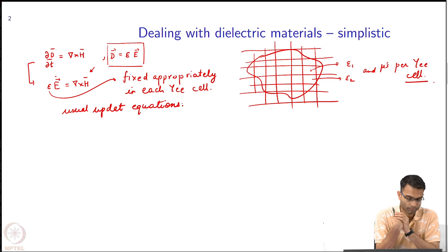What if my material also has non-zero conductivity? How do I deal with it? How will my update equations change then? Yeah, there is a lossy thing. How do I deal with it?